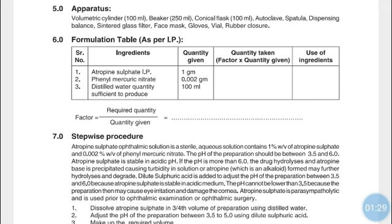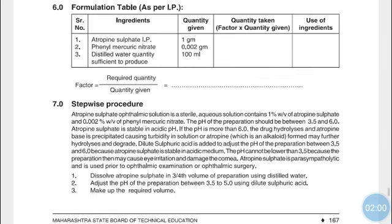Atropine Sulfate is used as a parasympatholytic or anticholinergic drug — it inhibits the parasympathetic nervous system and blocks the action of the neurotransmitter acetylcholine, a chemical messenger in the brain. Phenyl Mercury Nitrate is used as a preservative, and Distilled Water is used as the vehicle.